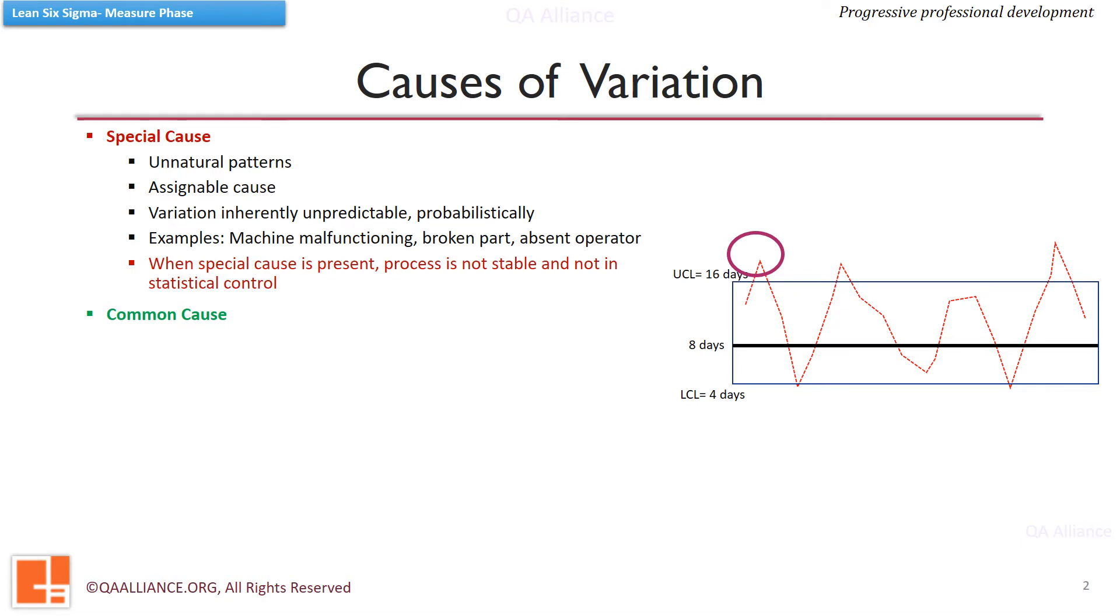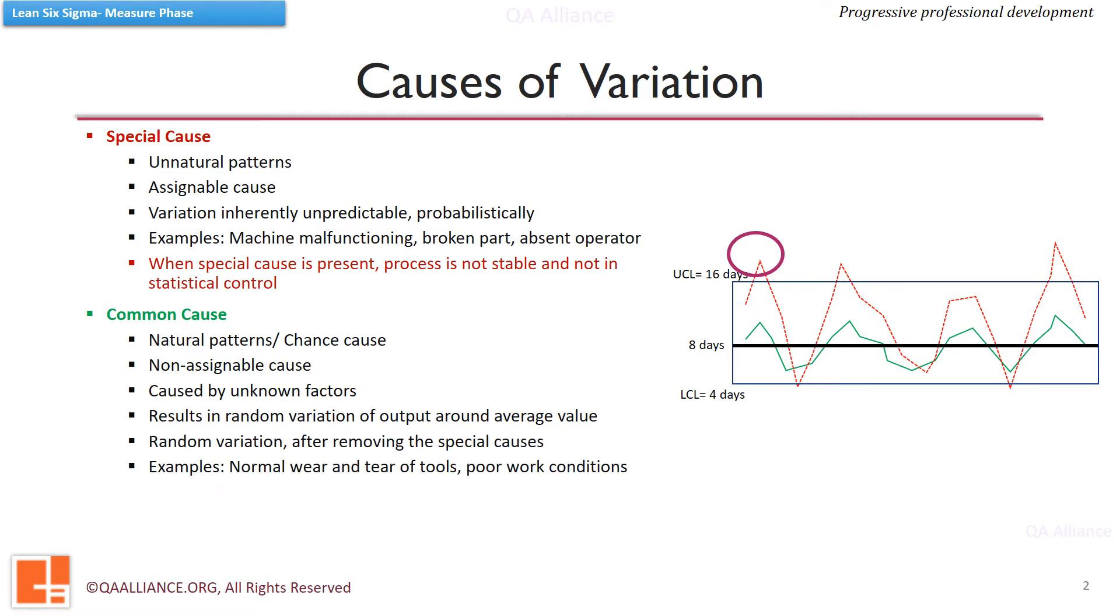Now let us see about the common causes. The inherent process variation which arises due to chance causes or the non-assignable causes. Such factors are not known and cannot be assigned to any output. If we see in this figure, the green pattern is a natural pattern within the control limits of the process. This is the random variation of the process, when there are no special causes. Such causes include normal wear and tear of the tools and machine.